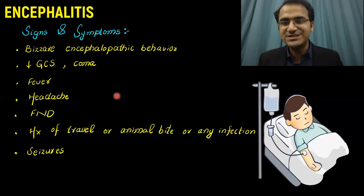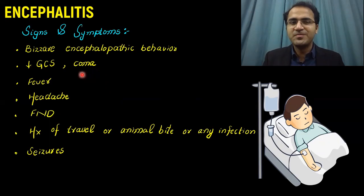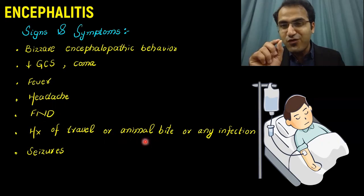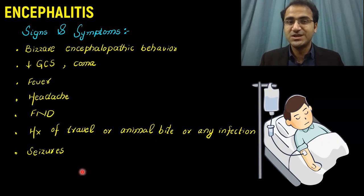What are the signs and symptoms of Encephalitis? Patients who have Encephalitis — inflammation of the brain — have bizarre encephalopathic behavior. They're altered in time, place, and person. Since the brain is inflamed, how can they think properly? The GCS is down most of the time. Patients are usually in coma. They have fever, headache, and focal neurological deficits. Usually there will be history of travel or animal bite or any infection — look for the source of infection from where that bug entered the body. Patient would also have seizures.